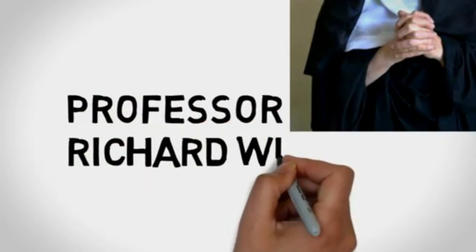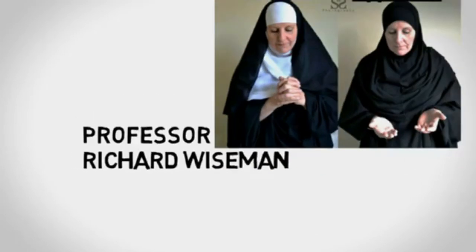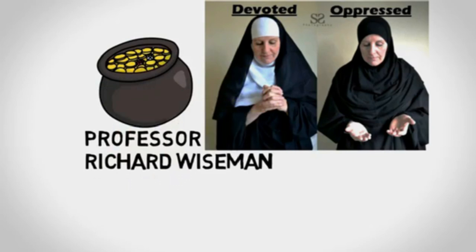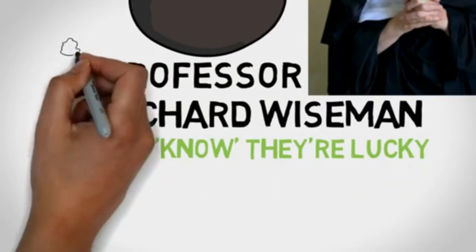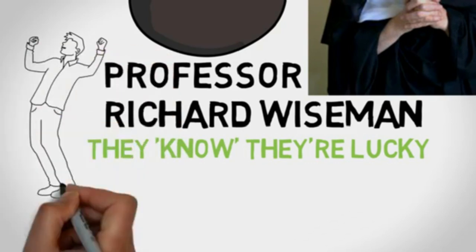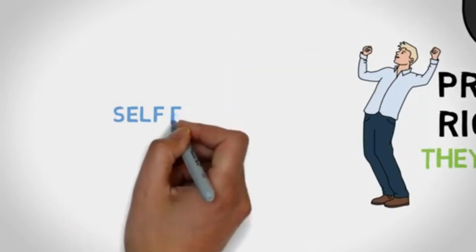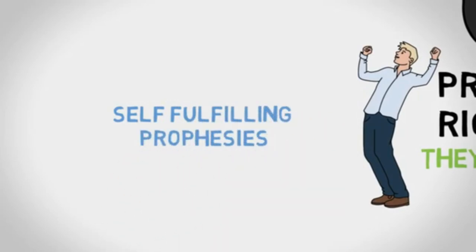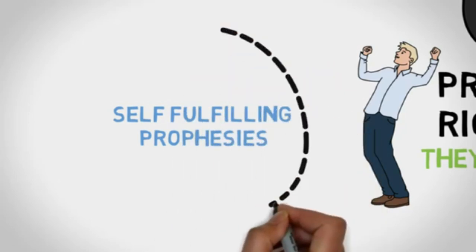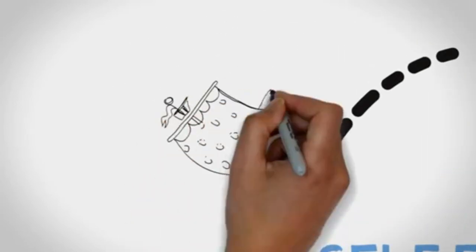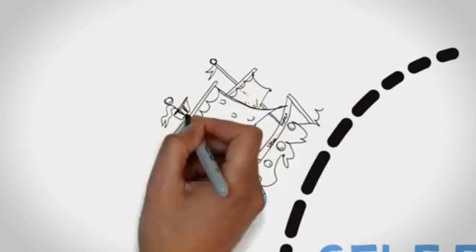Professor Richard Wiseman has been researching luck for over a decade. He says, in their minds they know they are fundamentally lucky. These assumptions become expectations, which in turn become self-fulfilling prophecies. Because lucky people expect things to work out in their favor in the end, when ill fortune comes their way, they reframe it or just ride it out till it turns back in their favor.